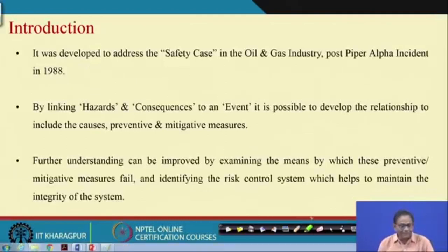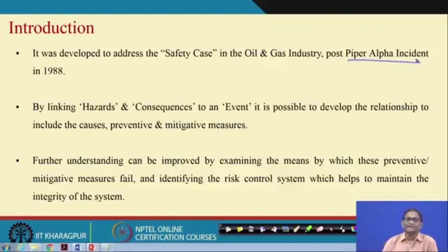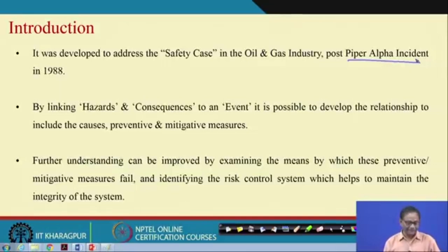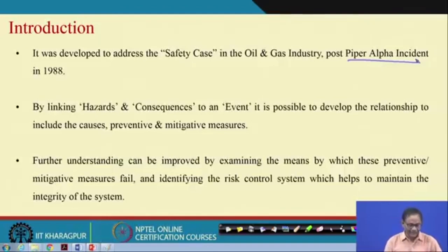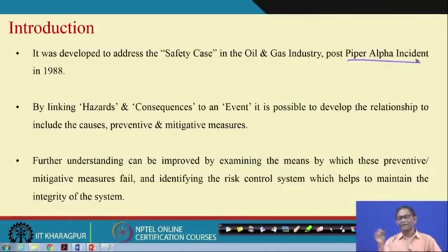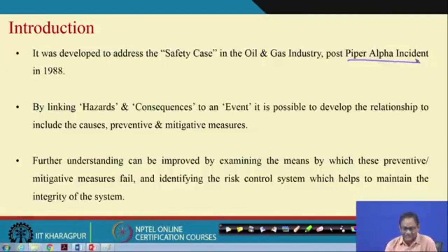If we go back to the history, bow tie was developed to address the safety case in the oil and gas industry — specifically the Piper Alpha incident. After Piper Alpha, this bow tie concept became popular, and in fact the literature shows it is increasingly popular. What it does basically is link the basic event failure to the top event in the fault tree, then linking to the event tree, and finally providing a complete path from basic events to accident scenarios.